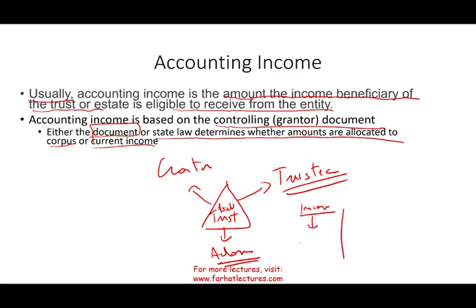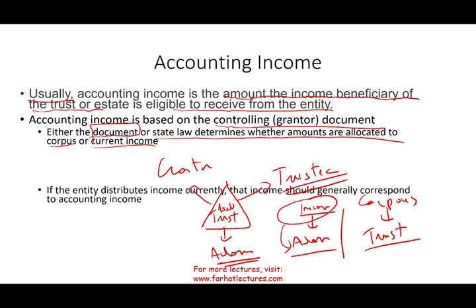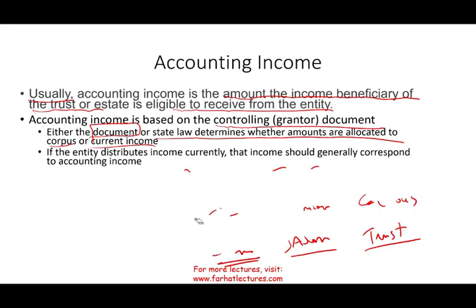Anything allocated to income will be taxed by the beneficiary — in this case, my son Adam. Anything considered corpus, the trust will pay the taxes on it. We don't have double taxation, so we just have to determine who pays: is it the trust or the beneficiary? Anything considered income, the son pays; anything considered part of the corpus, the trust pays.